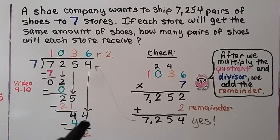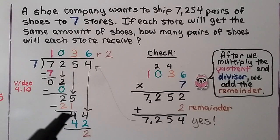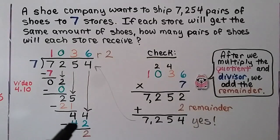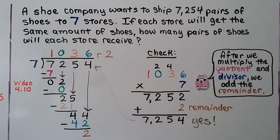Now it's this 4's turn to come down. We ask how many times can 7 fit into 44 — 6 times, because 6 times 7 is 42. We write the 42 here, do our subtraction, and get a remainder of 2. So each store will get 1,036 pairs of shoes, but there are going to be 2 pairs left over.